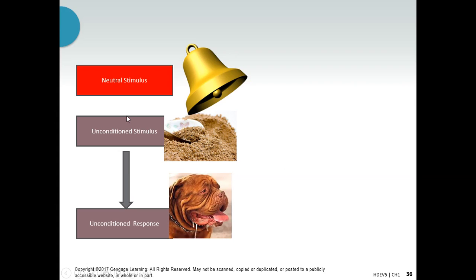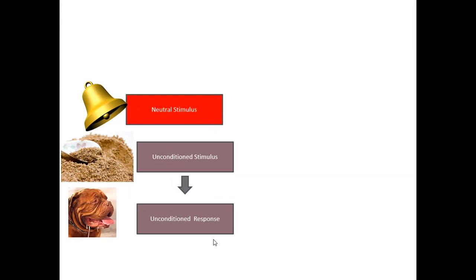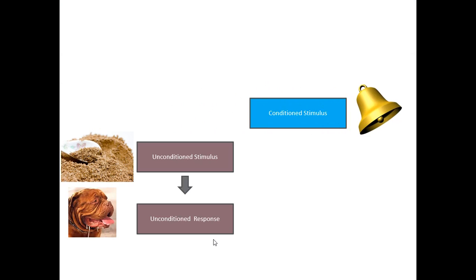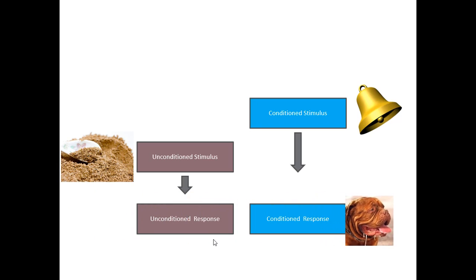So we're still calling this the unconditioned stimulus and unconditioned response. But if you do this enough times, eventually that bell is going to take on the qualities of the unconditioned stimulus. When it does that, we're going to start calling it the conditioned stimulus. And now that bell is going to give us the salivation, because the dogs have learned — or have been conditioned — to salivate to the sound of the bell.